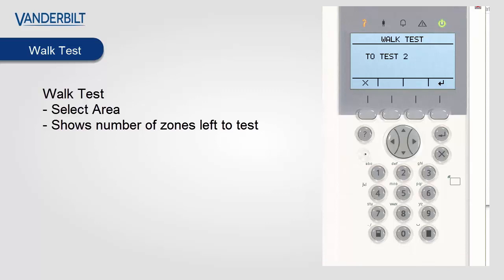When we activate the first zone the number will reduce, signalling that we have one more zone to test. When all zones are tested the keypad will signal the test is complete.